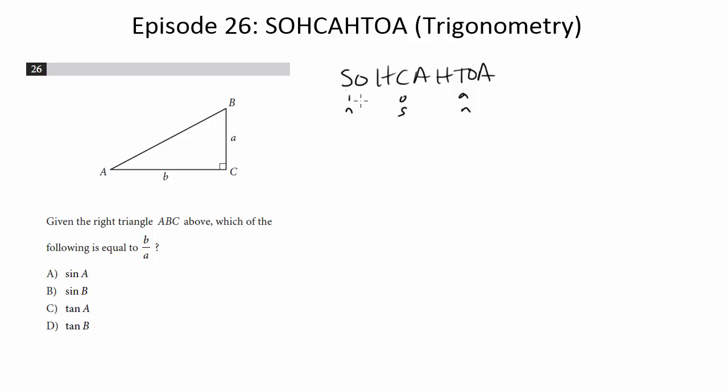So for sine, it's opposite over hypotenuse. For cosine, it's adjacent over hypotenuse. And for tangent, it's opposite over adjacent.